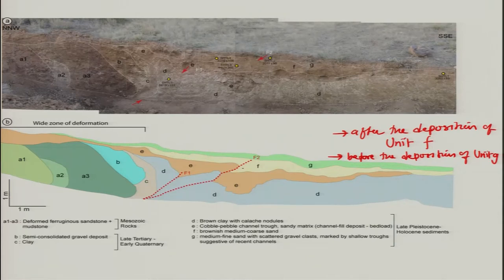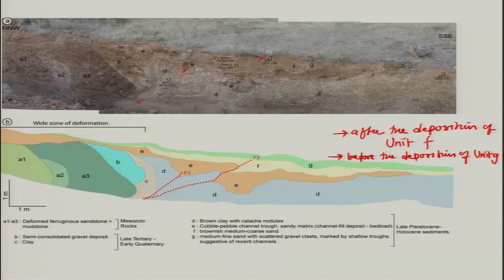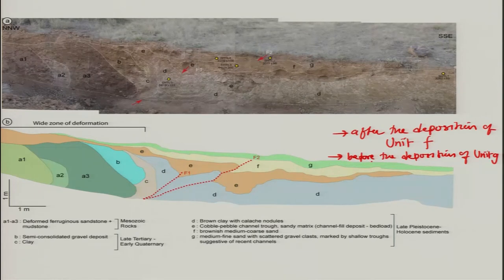We say this because unit F was the surface at the time of the earthquake, which got displaced — meaning F existed before the event and was already deposited. The event occurred after the deposition of unit F, and since unit G is capping the deformed unit F, the deposition of G came later. So the event took place before G was deposited, giving us a time bracket for the earthquake event.